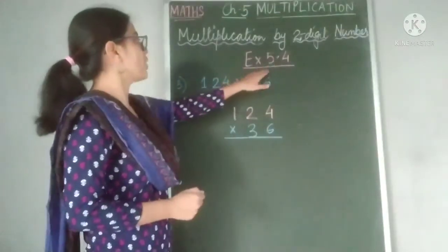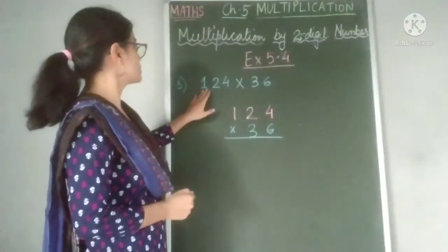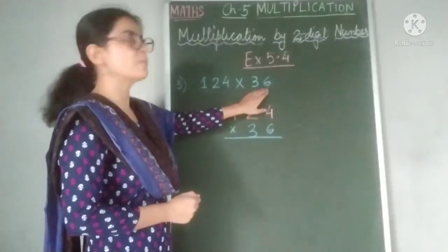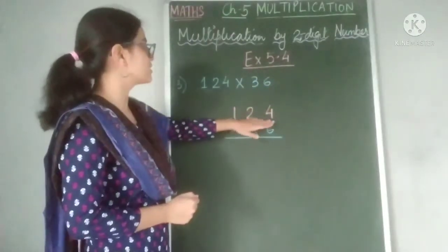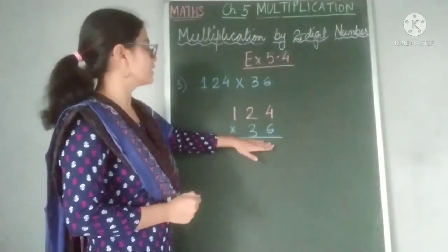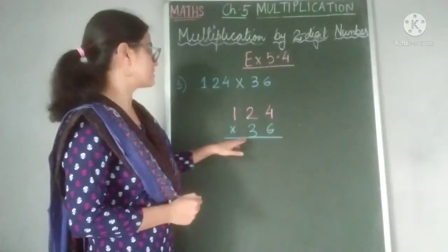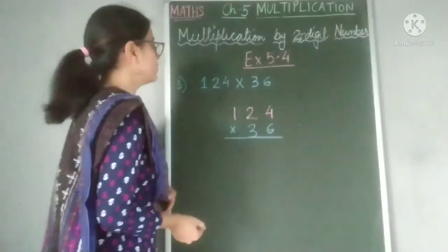From exercise 5.4, I have taken question number 3. The question is 124 multiplied by 36. Here our multiplier is a 2-digit number. We have placed the multiplicand on the top and the multiplier below. It is a 2-digit number, so ones and tens place, and here we have put the multiplication symbol. Let us proceed.